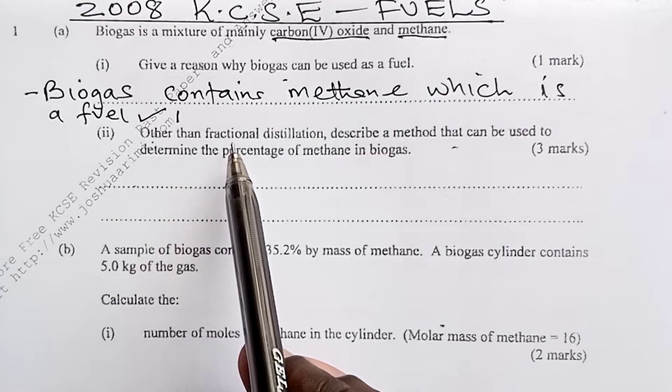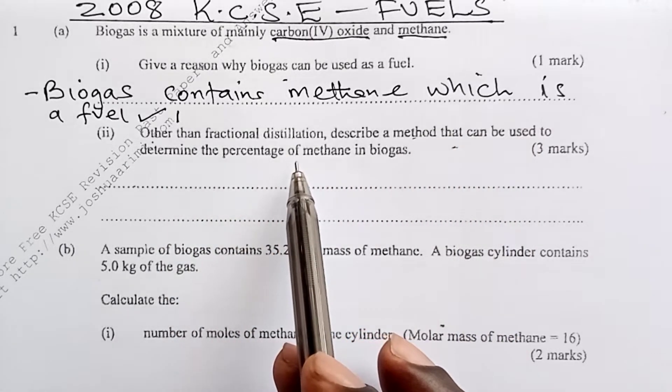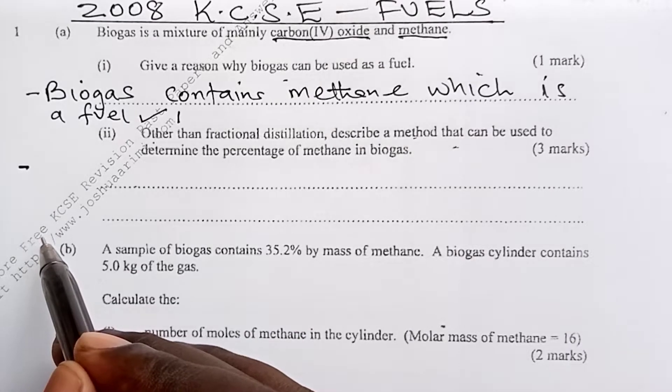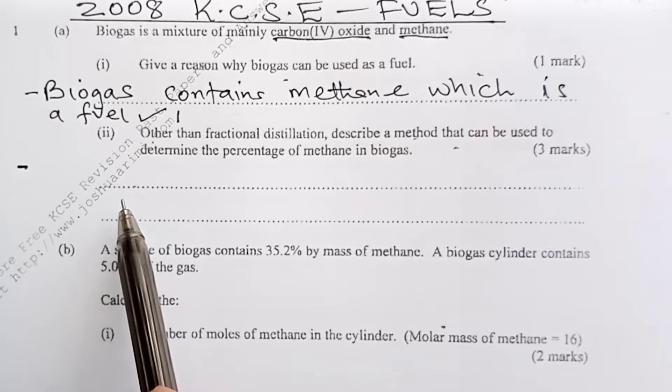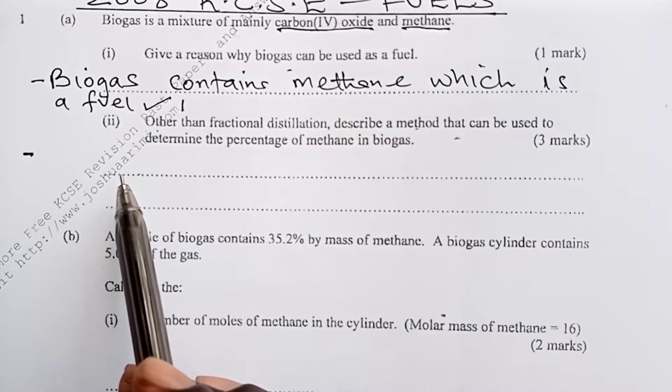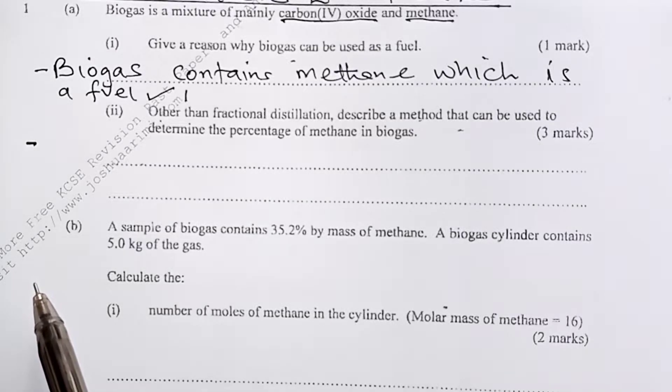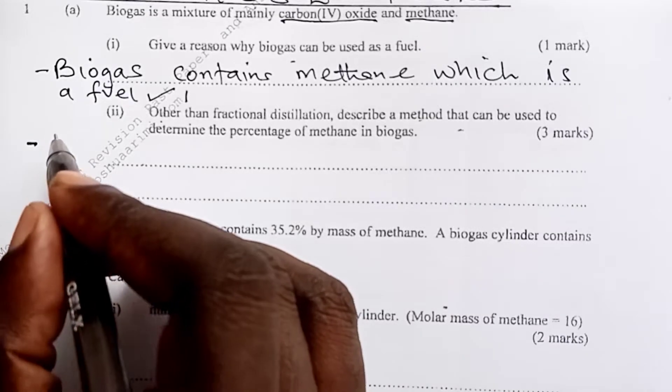Part 2 of Section A: Other than fractional distillation, describe a method that can be used to determine the percentage of methane in biogas. So this one was asking for an alternative method of separating methane from carbon-4 oxide so that we are able to know its percentage composition. So how can we separate methane from carbon-4 oxide? The answer is simple. When you pass the mixture through any alkali, then carbon-4 oxide is able to be absorbed, leaving your methane separated from the carbon-4 oxide.